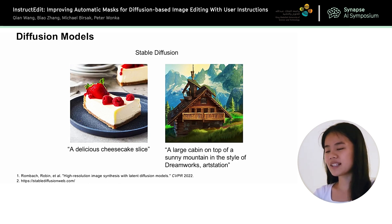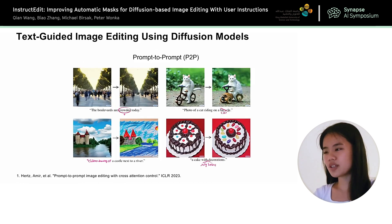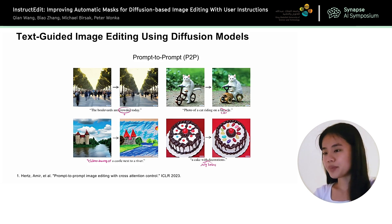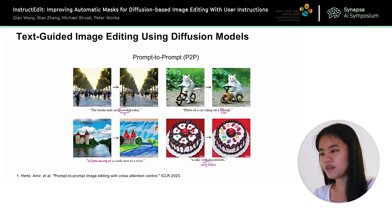given a text prompt as input, it can generate either realistic or artistic images. Diffusion models can not only generate new images but also edit existing images. For one of the diffusion-based editing methods, prompt-to-prompt, it can edit an input image by manipulating the attention maps in the diffusion models. For example, it can change from a photo of a cat riding on a bicycle to a photo of a cat riding on a car.